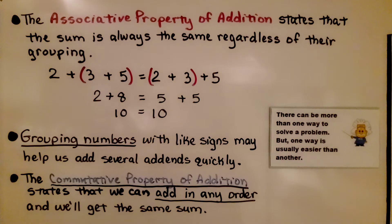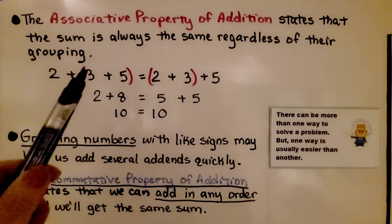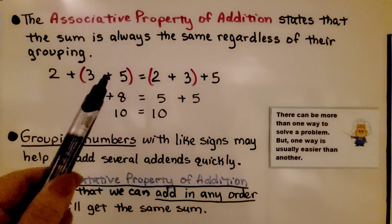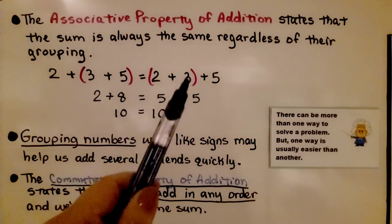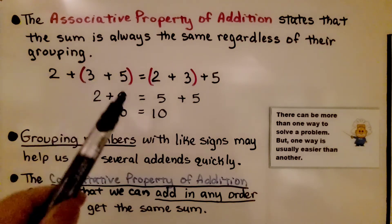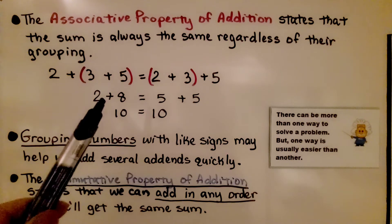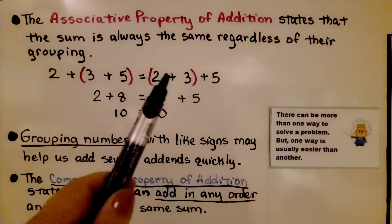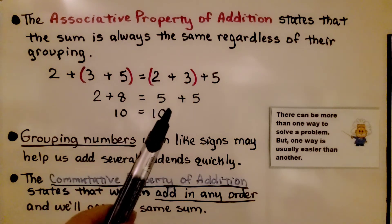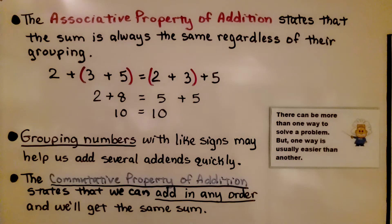The associative property of addition states that the sum is always the same regardless of grouping. We can add these three addends by first grouping 3 plus 5, or we can group 2 plus 3. 3 plus 5 is 8, so we have 2 plus 8, that's 10. And 2 plus 3 is 5, and 5 plus 5 is also 10. So grouping numbers with like signs may help us add several addends quickly.